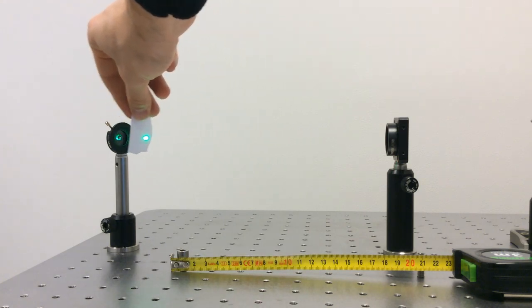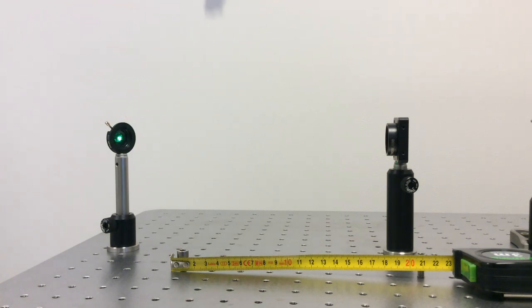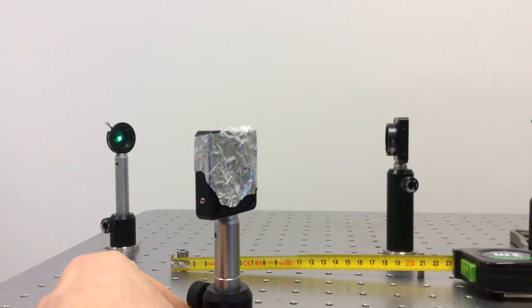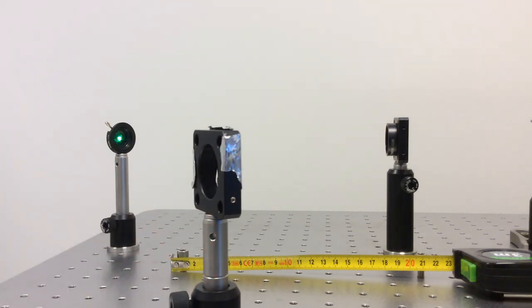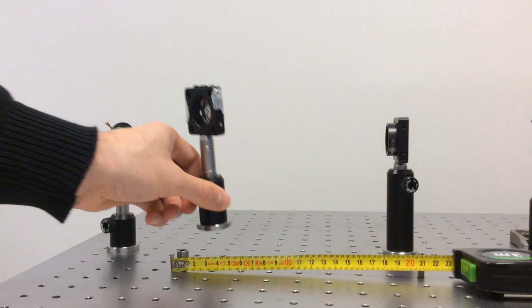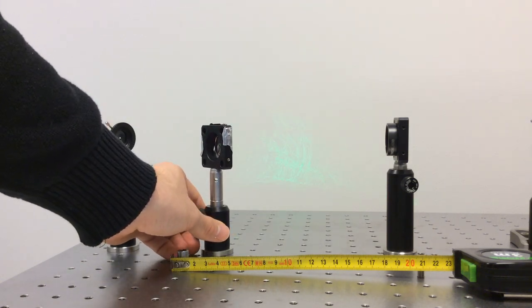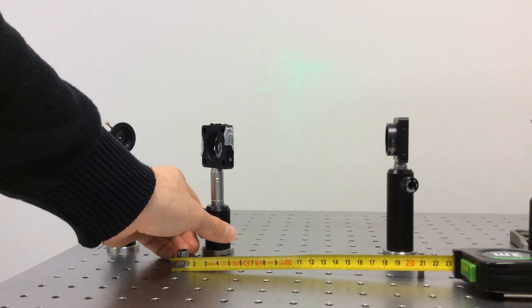Here I have a beam that goes through my lens and into a focus somewhere along the beam path, potentially where my tape measure is. Now let's take aluminum foil attached to a post and put it into the beam path.